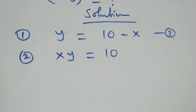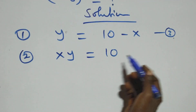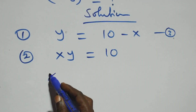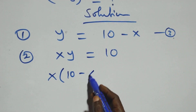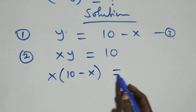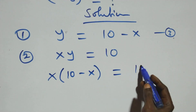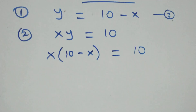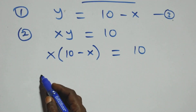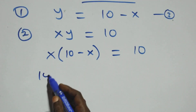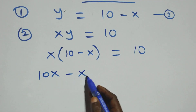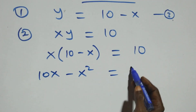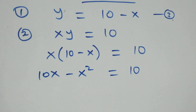We substitute equation three into equation two. This becomes x times (10 minus x) equals 10. Then we open the bracket and we have 10x minus x squared equals 10.